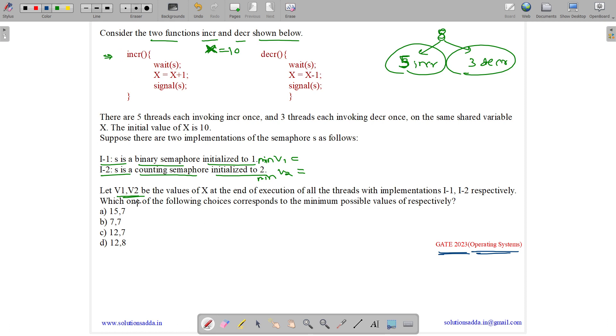First case is when we have a binary semaphore. The value of semaphore is 1. It's a binary semaphore and we have wait or signal which means there will be mutual exclusion. Mutual exclusion is guaranteed which means at a time only one process can be in critical section. So if we have X initially as 10, then 5 operations of this increment will be done by the 5 threads. It will increment to plus 5 and then 3 decrement will be done, minus 3. So X will have a value 10 plus 5, 15 minus 3, 12.